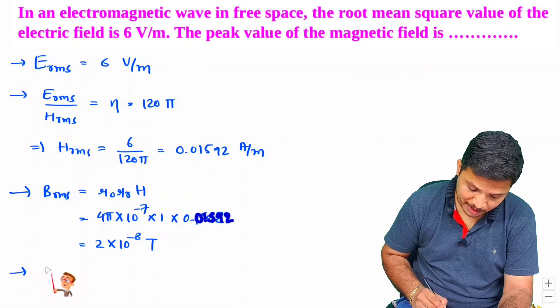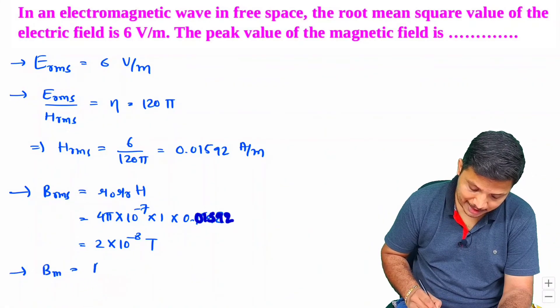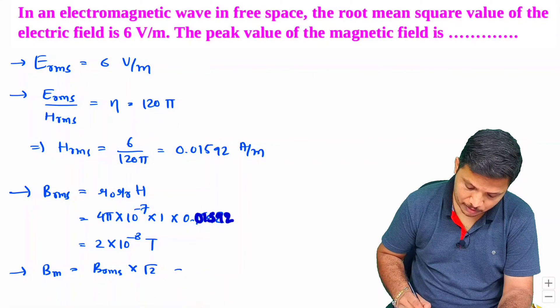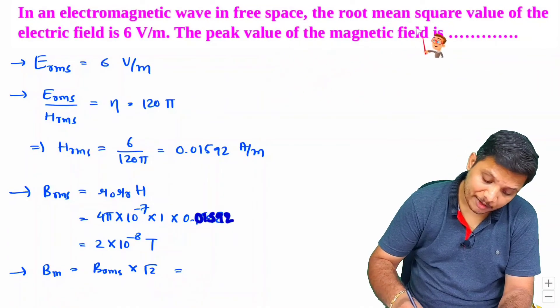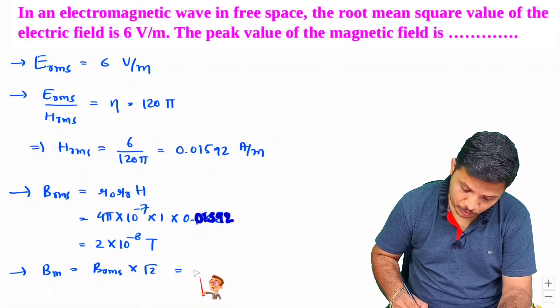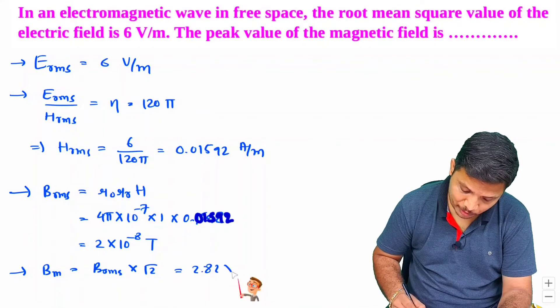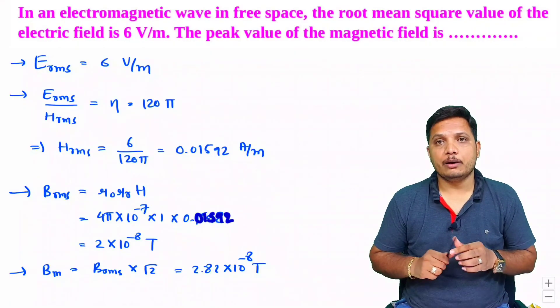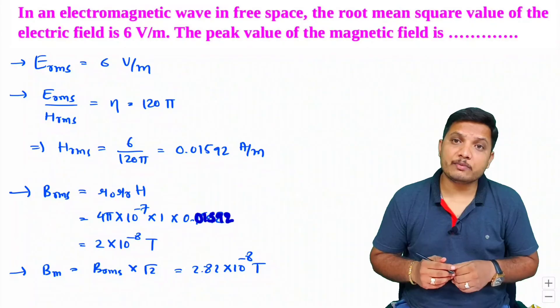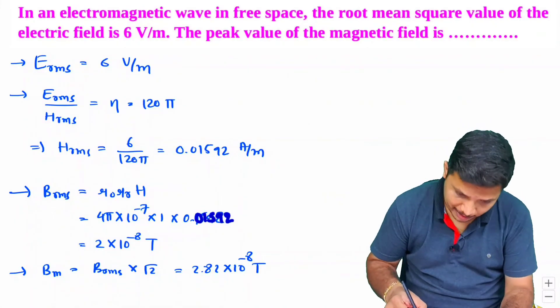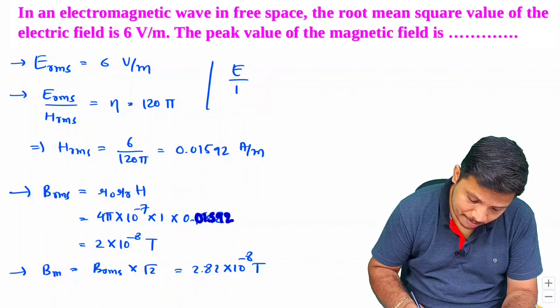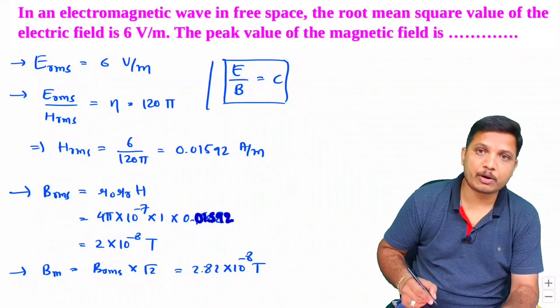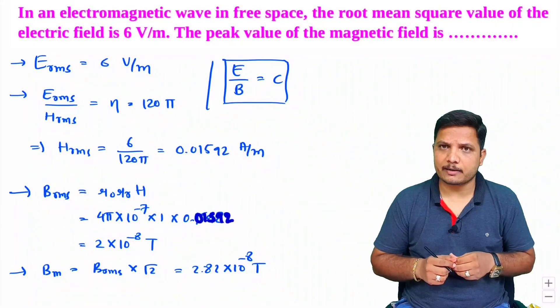Now if you wanted to have peak value means B_max, then that is B_rms into √2. So we will be having peak value of magnetic field that is 2√2, that is 2.82 × 10⁻⁸ tesla. So this is how we can solve problems. Now there is one more way by which we can solve this problem where we can have E by B equals velocity of light. This formula can be used to solve same problem and you will be getting same answer.